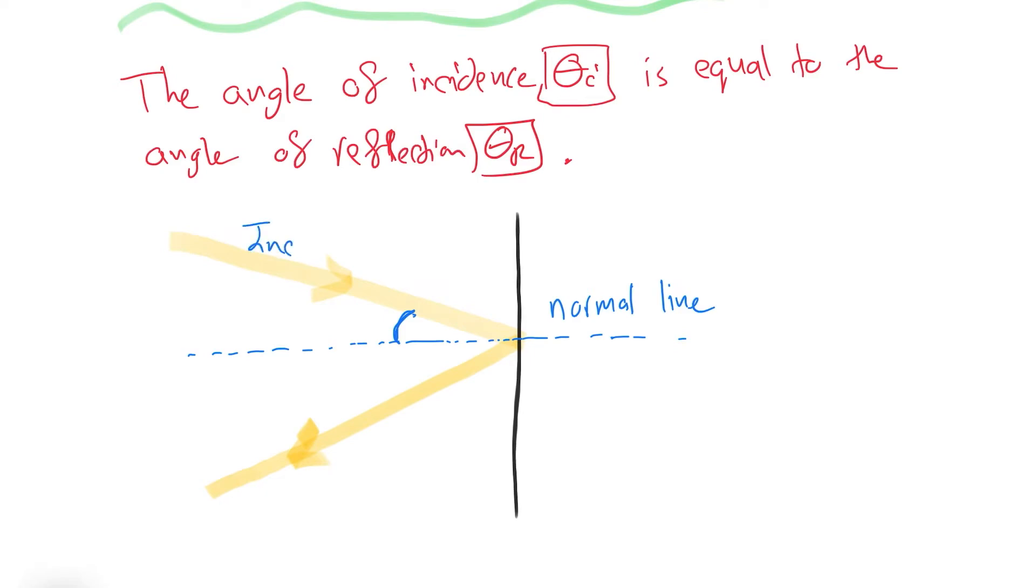Between the incident ray, which is approaching the surface, we give it θi. And this is the reflected ray, which is bouncing off the surface, which is θr. As per the law of reflection, θi equals θr. So keep that in mind—the angle of incidence equals the angle of reflection.